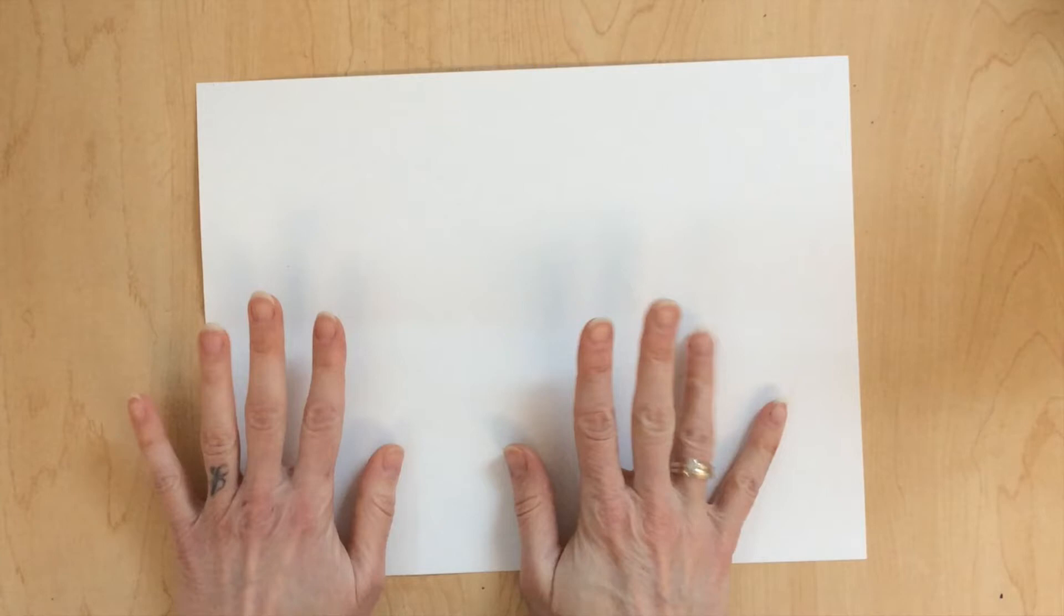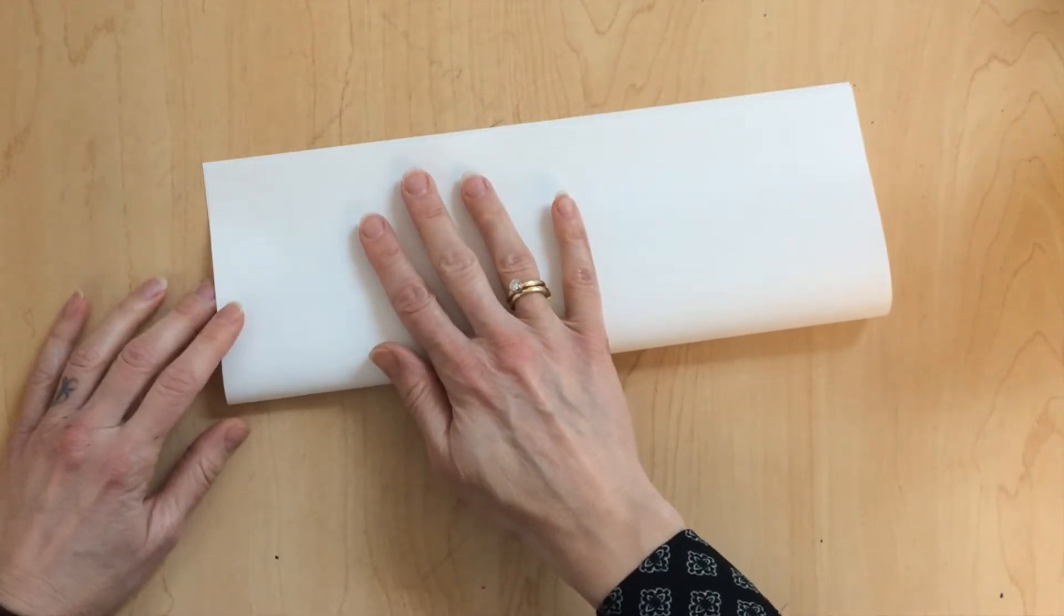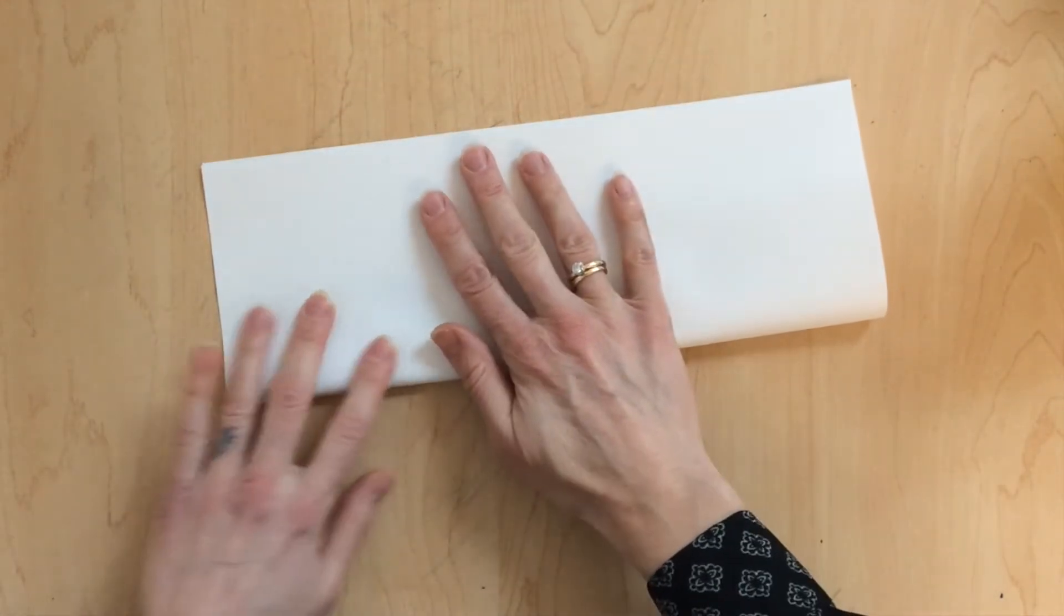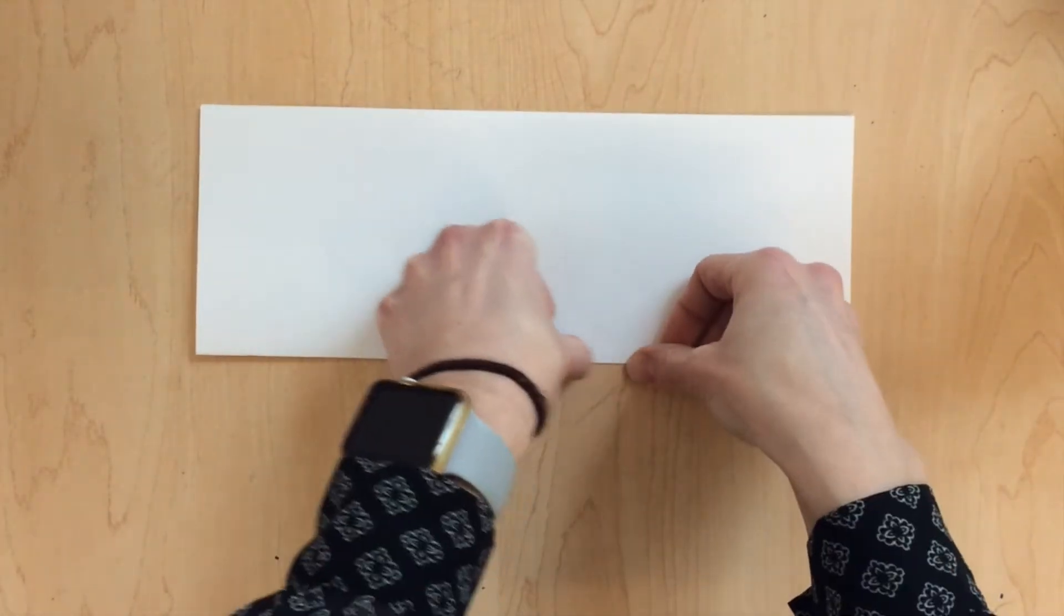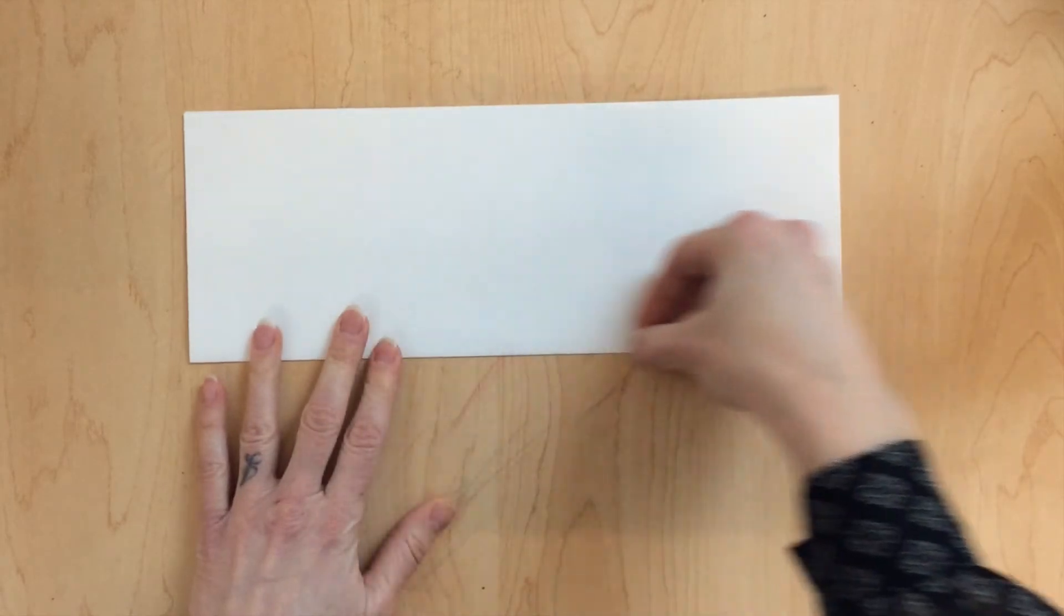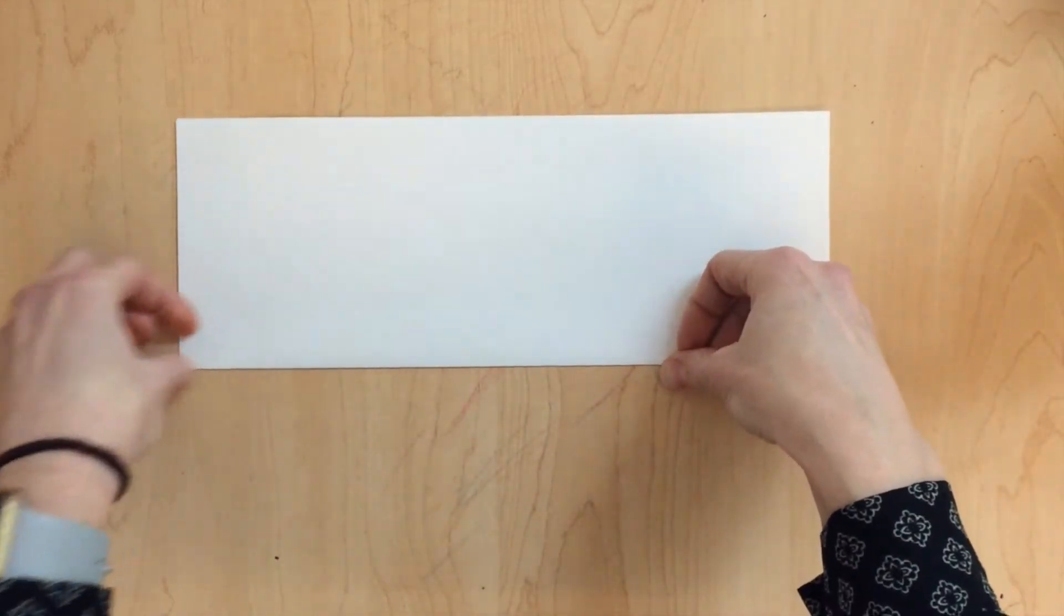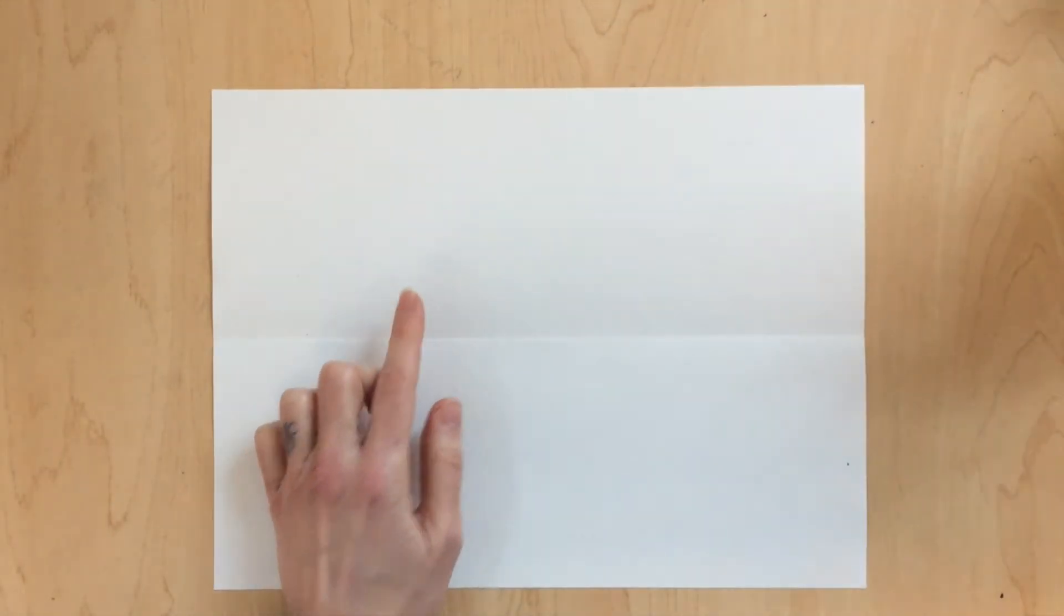So today, we're going to be using symmetry in our work of art. What you need is a piece of paper, white paper, and your pencil to get started. The very first thing you're going to do is put your paper sideways in front of you and then fold the bottom to the top just like this. Make sure you fold it nice and flat. We're going to be folding it a couple of times today. Now open it back up and keep it like this so the fold is going left to right in front of you.